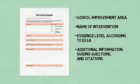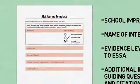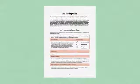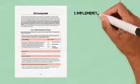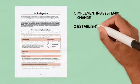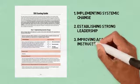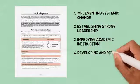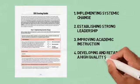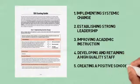After considering the information available, team members individually rate each intervention as not recommended, recommended, or strongly recommended. The SEA scoring guide provides sample interventions based on the following five areas, which research shows as being important to school improvement: implementing systemic change, establishing strong leadership, improving academic instruction, developing and retaining a high quality staff, and creating a positive school climate and culture.